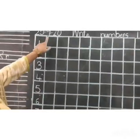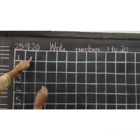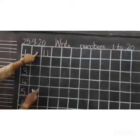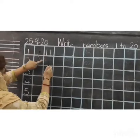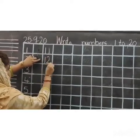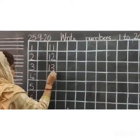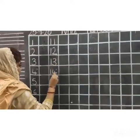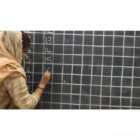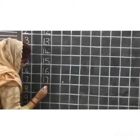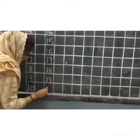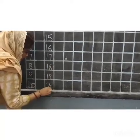Now, leave one box with your fingers. Write 11. After 10, you have to write 11. Then 12, 13, 14, 15, 16, 17, 18, 19, 20.